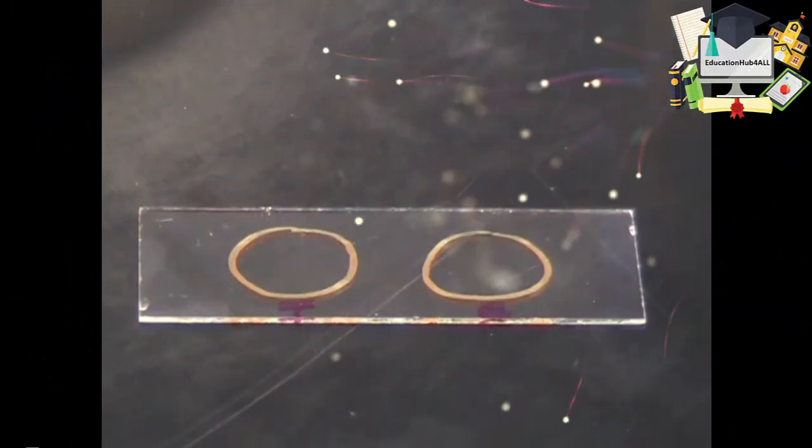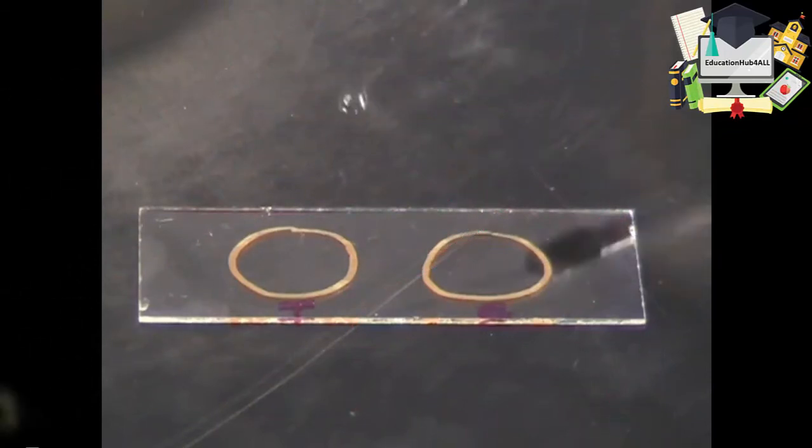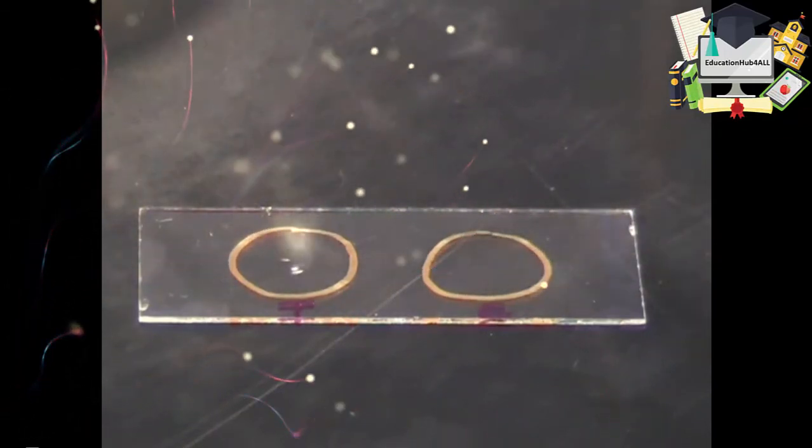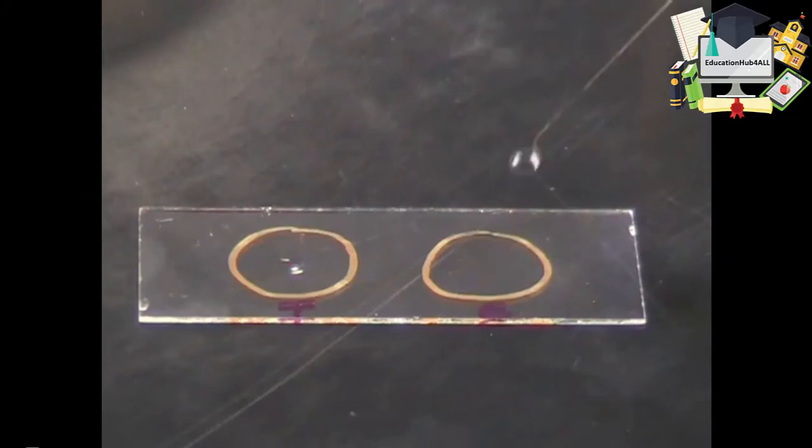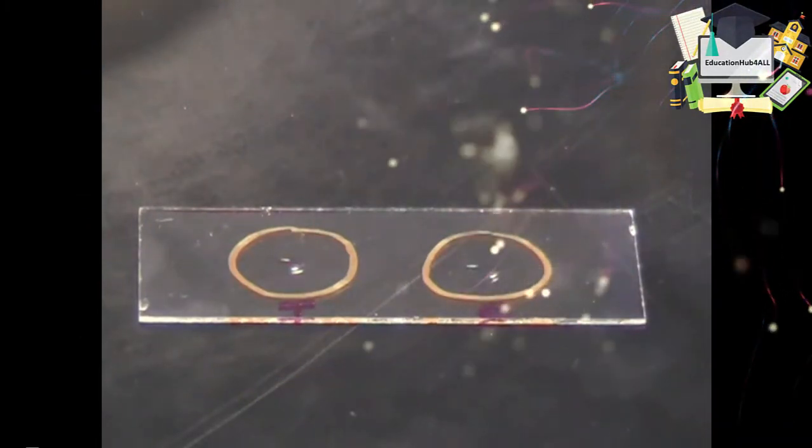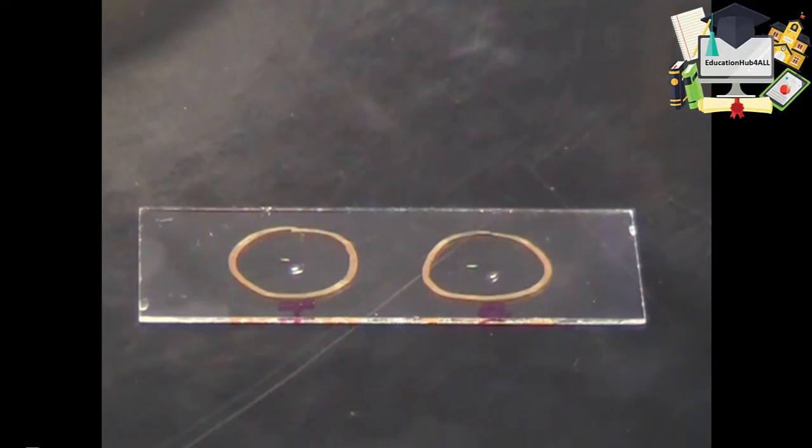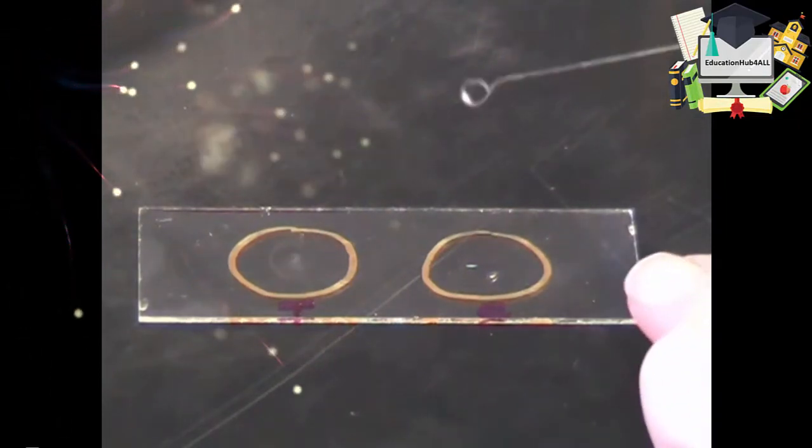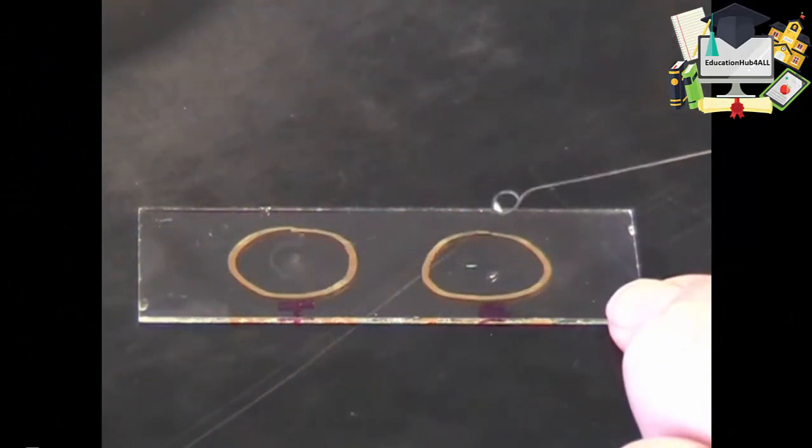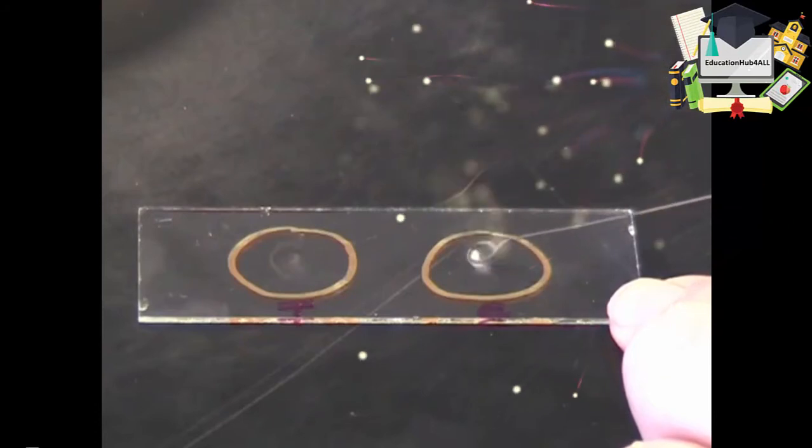Add a loop full of saline to each of the circles. Emulsify your test sample into the saline in these circles. Make sure there is a visible amount of bacteria present.